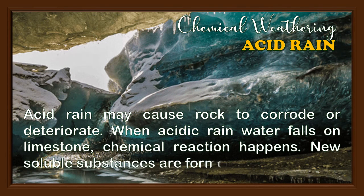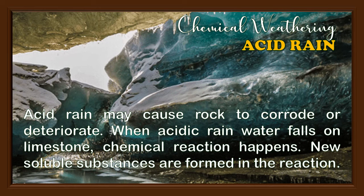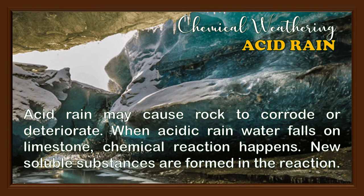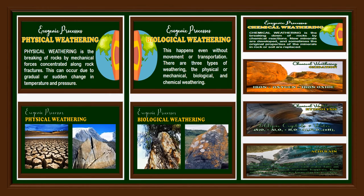Another type of chemical weathering is acid rain, which may cause metals or rocks to corrode or deteriorate and change their properties due to reaction with acids. When acidic rainwater falls on limestone, a chemical reaction happens and new soluble substances are formed. Those are the different types of weathering: physical, also known as mechanical weathering; biological weathering; and chemical weathering.